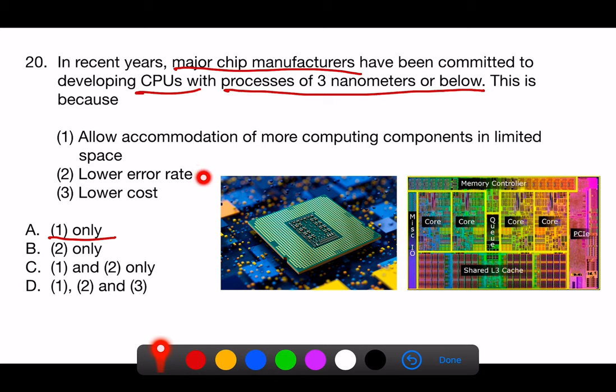2. Lower error rate is not necessarily a direct result of smaller process nodes. In fact, as transistors become smaller, they can become more susceptible to errors like electron leakage and other quantum effects.